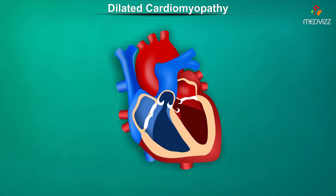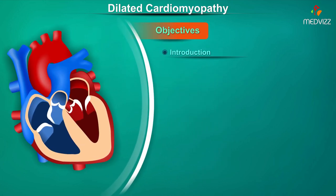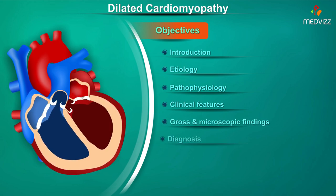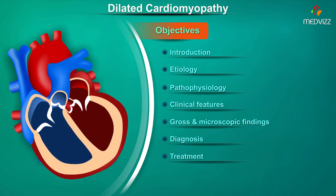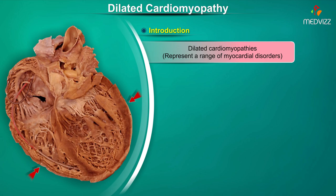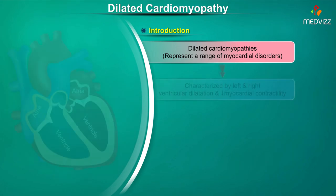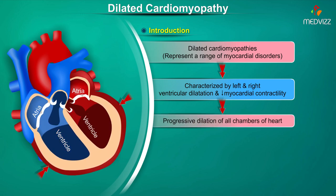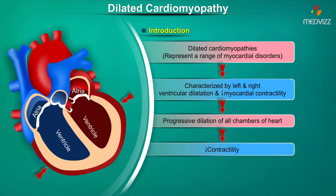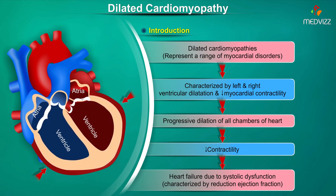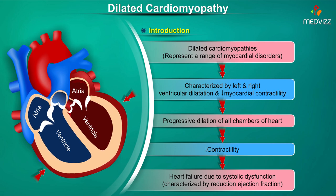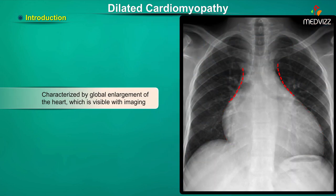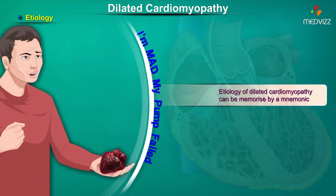Dilated cardiomyopathy, otherwise termed congestive cardiomyopathy, represents a range of myocardial disorders characterized by left and right ventricular dilation and reduced myocardial contractility. There is progressive dilation of all chambers of the heart causing reduction in contractility, resulting in heart failure due to systolic dysfunction. Systolic dysfunction is characterized by a reduction in ejection fraction, and dilated cardiomyopathy is characterized by global enlargement of the heart visible on imaging.